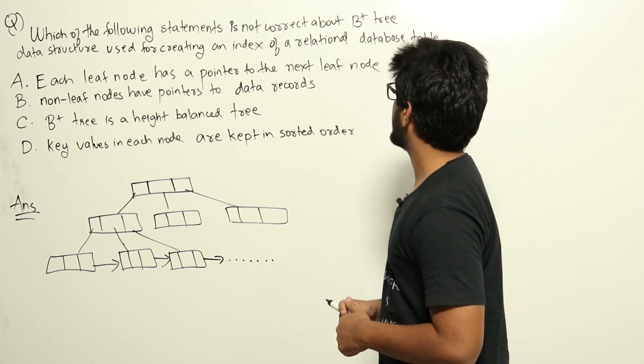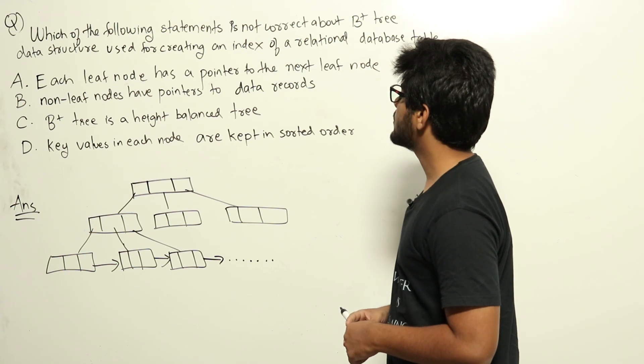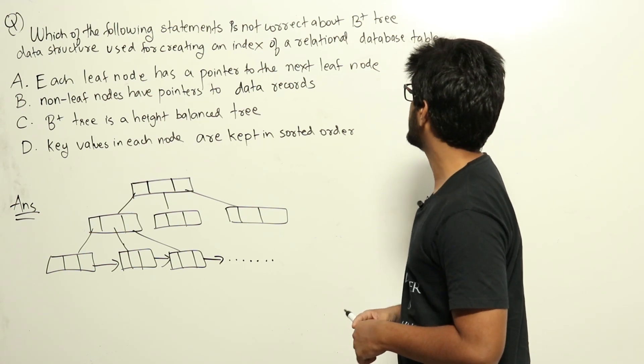Which of the following statements is not correct about B plus tree data structure used for creating an index of a relational database table?